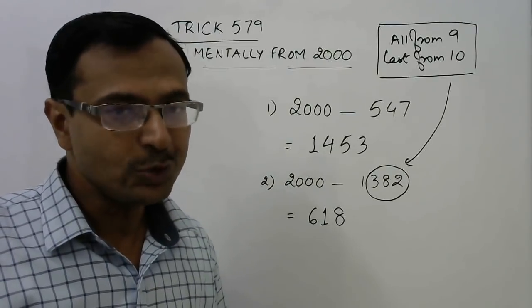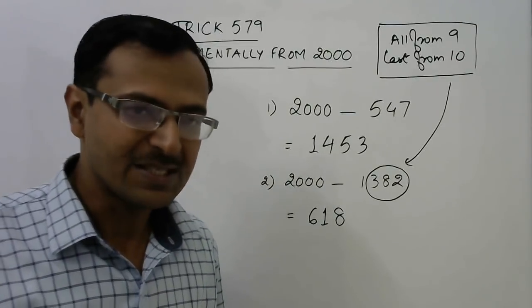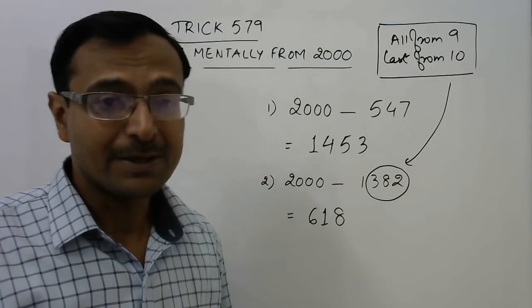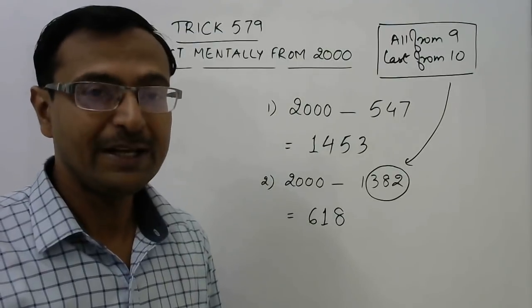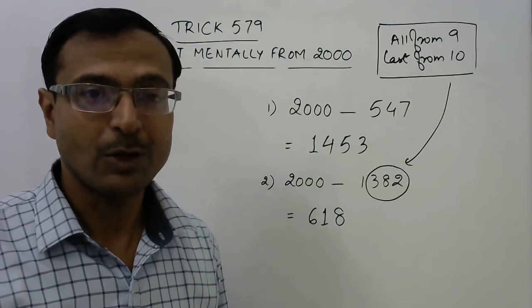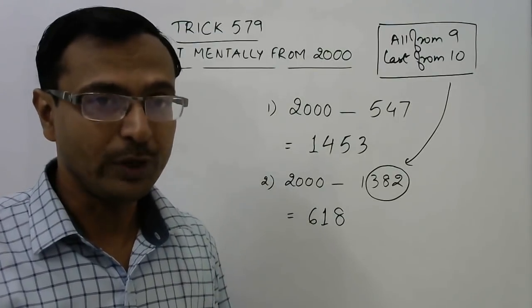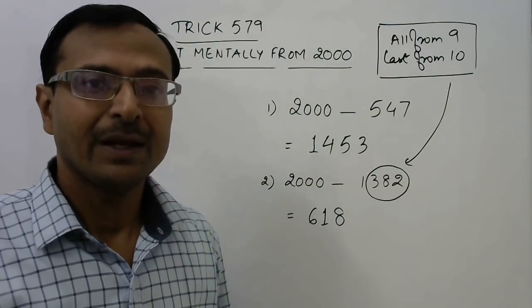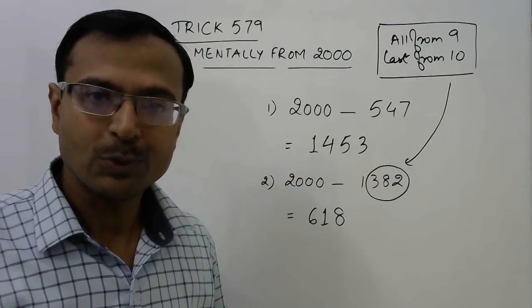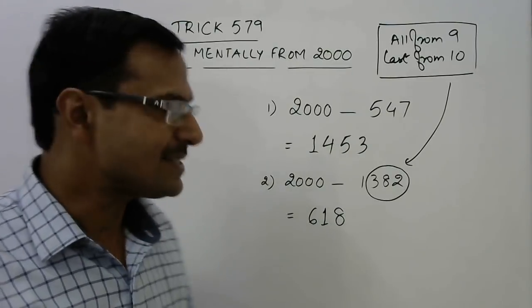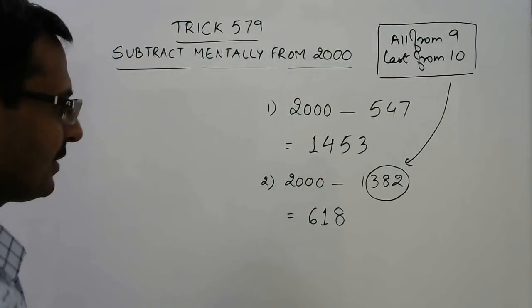Normally, students commit a lot of errors when they do subtraction from 2000 mentally using the traditional approach. Let's see some more examples of this kind.